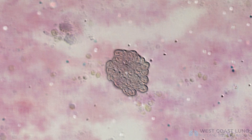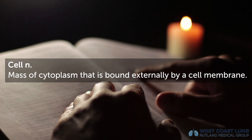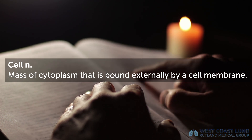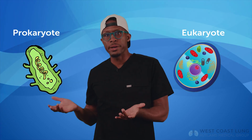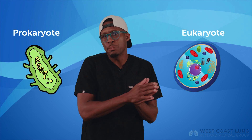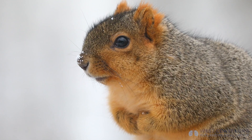Cancer is defined as a disease caused by an uncontrolled division of abnormal cells in a part of the body. The cell is defined as a mass of cytoplasm that is bound externally by a cell membrane. There are eukaryotes and prokaryotes — eukaryotes have a nucleus while prokaryotes don't. These are the two types of cells. Humans, animals, fungi — they're all eukaryotes. So when defining cancer, we're going to stick with that type of cell.